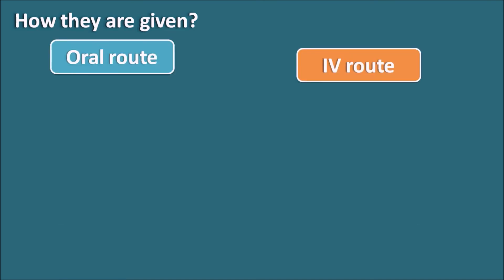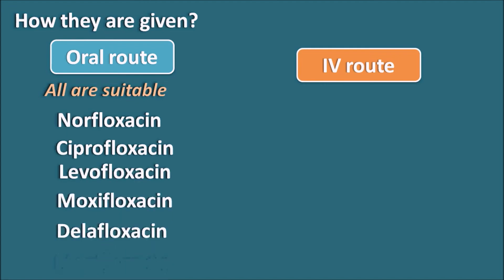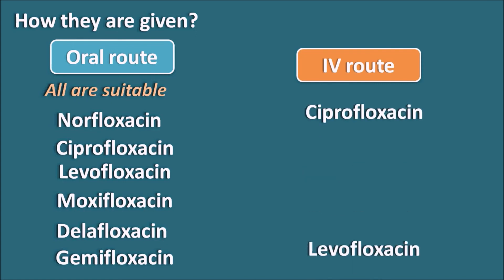Fluoroquinolones can be given by oral route as well as by IV route. All fluoroquinolones are suitable by the oral route — for example, norfloxacin, ciprofloxacin, levofloxacin, moxifloxacin, delafloxacin, and gemifloxacin. Under emergency conditions or severe infections, drugs can be given by IV route. Drugs that can be given by IV route include mainly ciprofloxacin, levofloxacin, and delafloxacin.